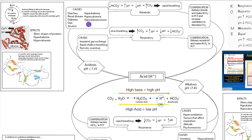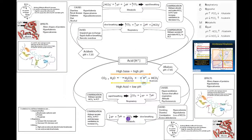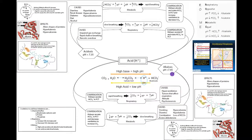When considering methods to alleviate acidosis and alkalosis, it's really not that complex. In respiratory acidosis, we can secrete hydrogen ions from the proximal convoluted tubule and make additional bicarbonate. In metabolic acidosis, we can do those same things but also increase ventilation to get rid of additional CO2 — that's why metabolic acidosis causes rapid breathing. In respiratory alkalosis, the kidneys secrete bicarbonate in the proximal convoluted tubule. In metabolic alkalosis, the kidneys secrete bicarbonate and decrease ventilation to increase CO2, which increases acid and cures the alkalosis.